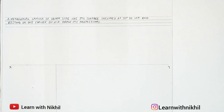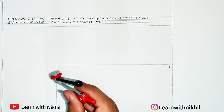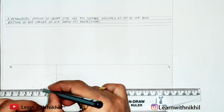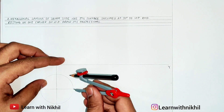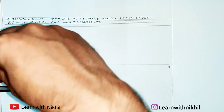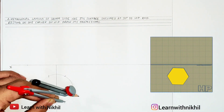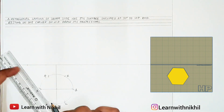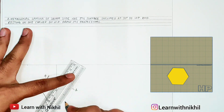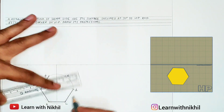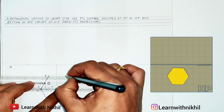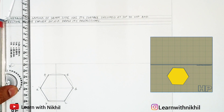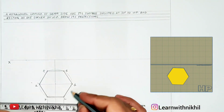First draw a straight line and mark the center point. To draw the hexagon, draw a circle with radius 24 millimeters using the compass. Then draw a perpendicular line through the center, and keeping the pointer on each arc point, cut arcs around the circle to divide it into six equal parts. Joining these six points gives the hexagon. Mark the edges as A, B, C, D, E, and F. The side dimension is 24 millimeters.